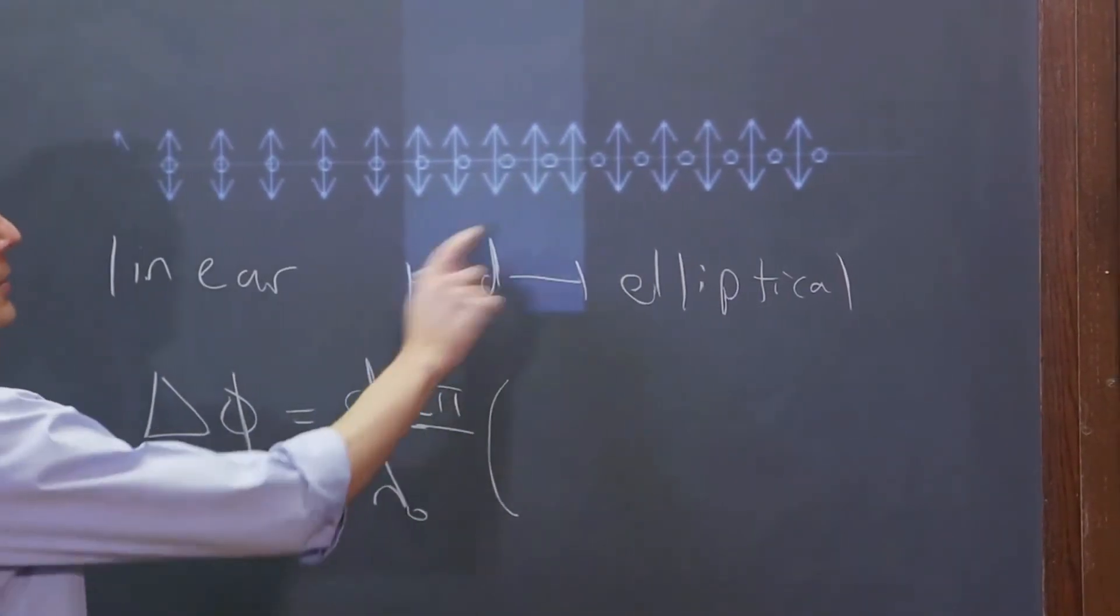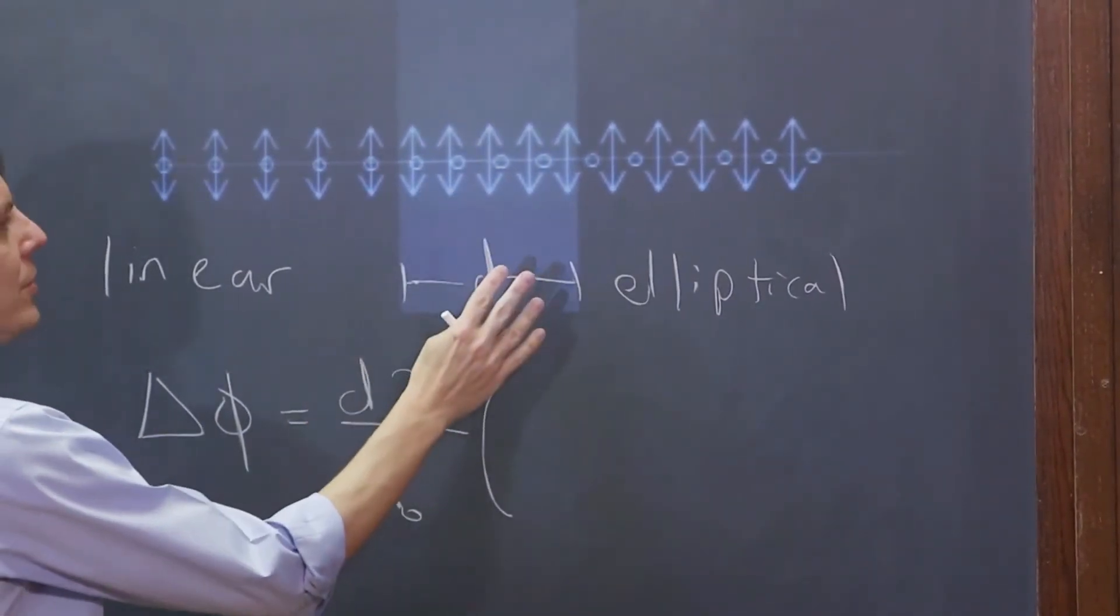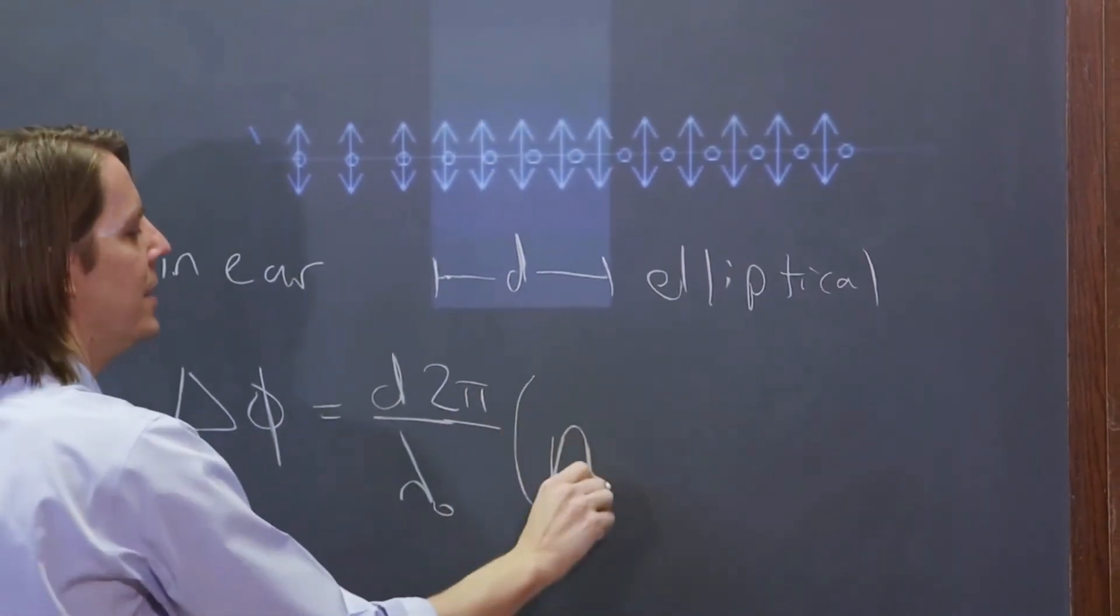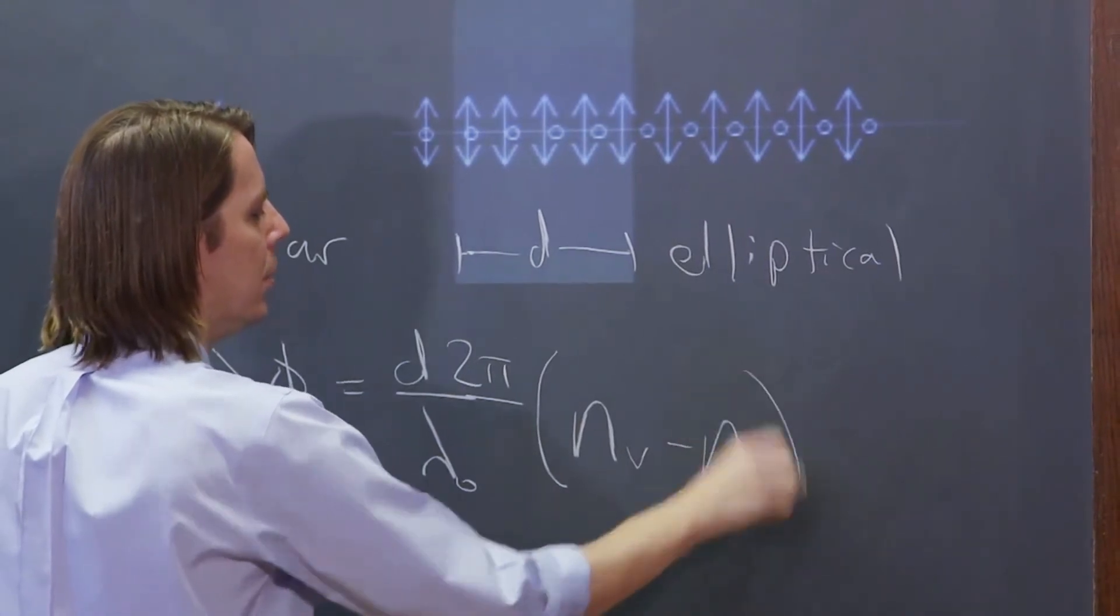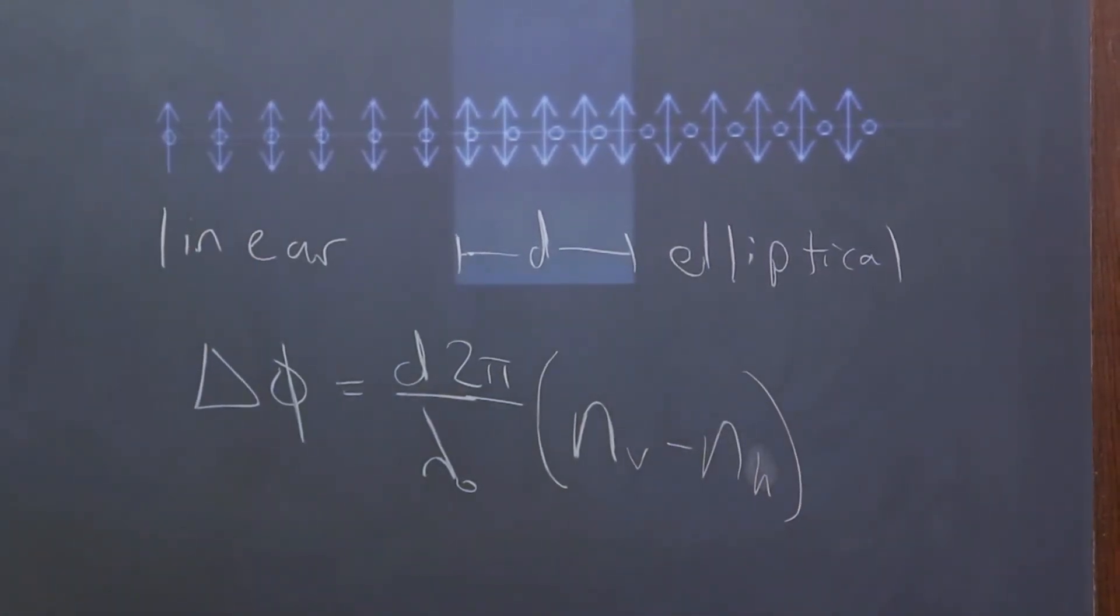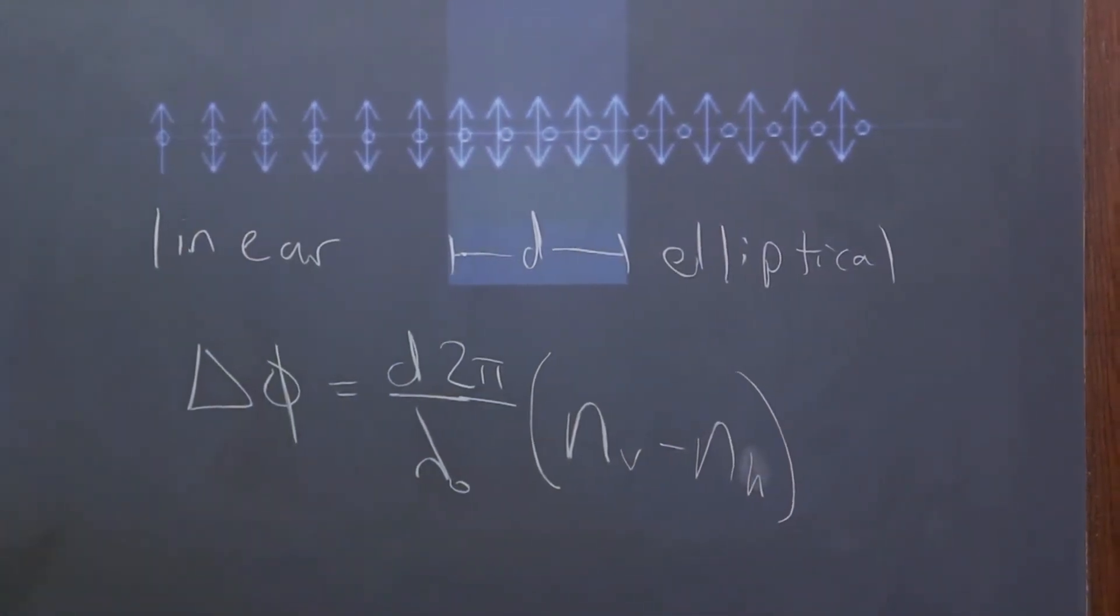And it's not just how many cycles it goes through, it's how much difference does it build up. So you could put the index of the vertical minus the index of the horizontal light, the two indices. So you could say that's going to give you the phase difference.